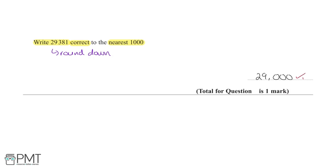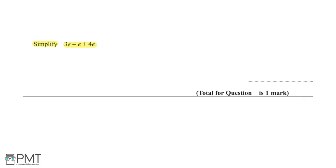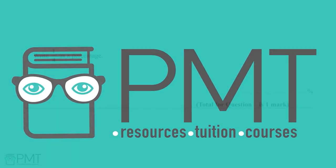We have been asked to simplify 3e minus e plus 4e for one mark. We just combine the e's. Think of them as sweets: 3 sweets minus 1 sweet gives 2 sweets, then add 4 sweets to get 6 sweets altogether. So the final answer is 6e, and you get one mark for that correct answer.